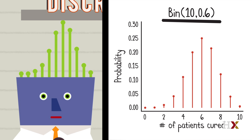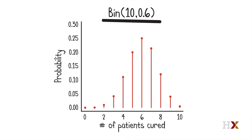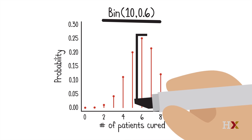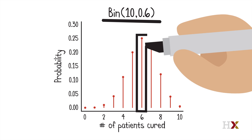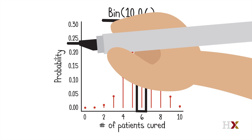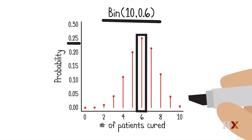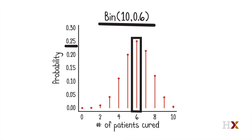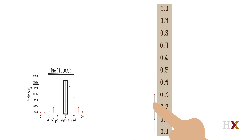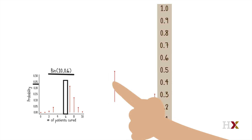Hey, that looks just like my hair! You can see that 6 is the most likely value, but that doesn't mean it's especially likely. Its probability is about 0.25. There's about a 90% chance, though, that X will be between 4 and 8.